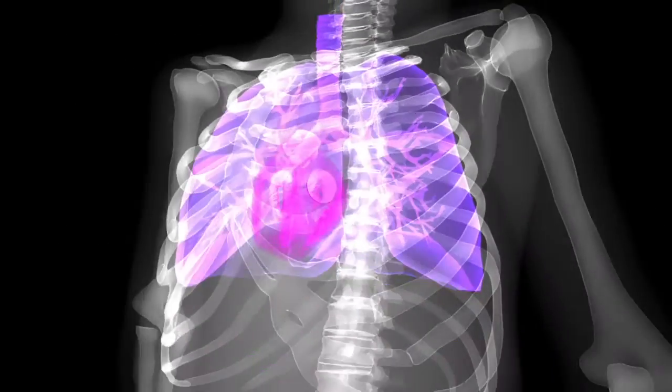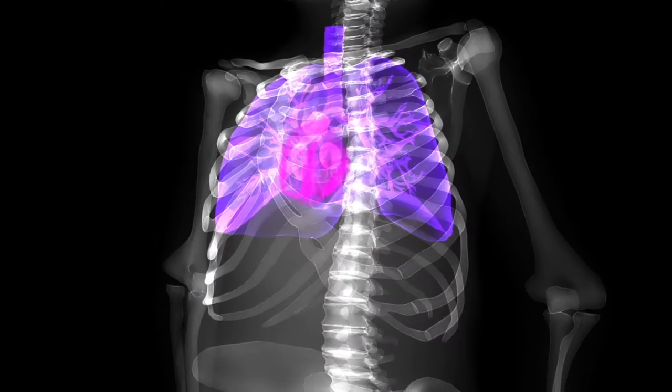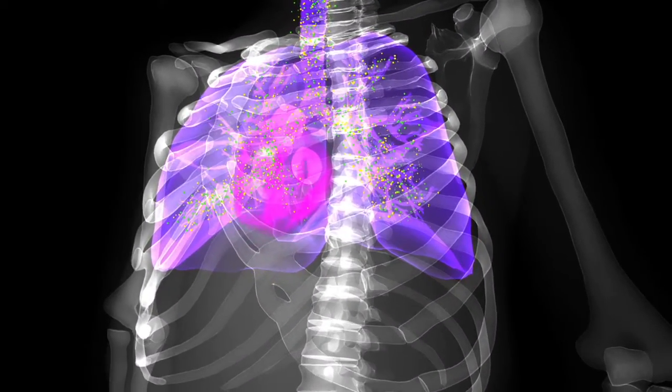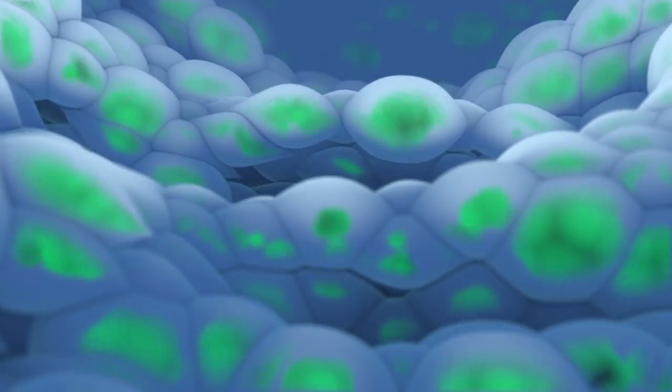In the respiratory system, accumulation in lysosomes in the bronchi, upper airways, intrathoracic airways, and the trachea causes progressive narrowing.